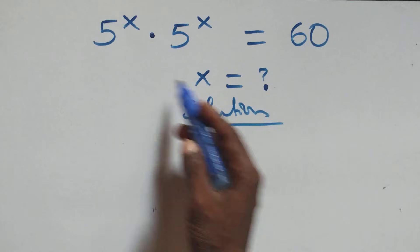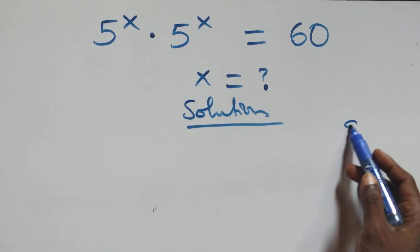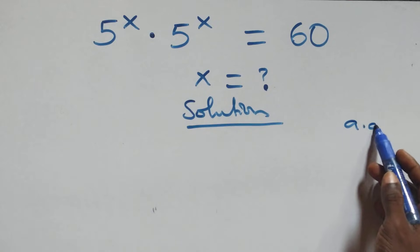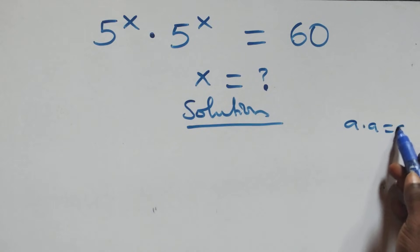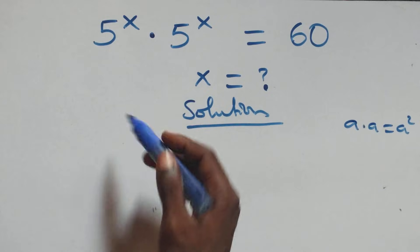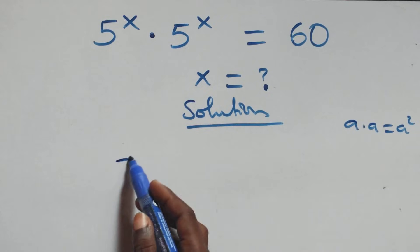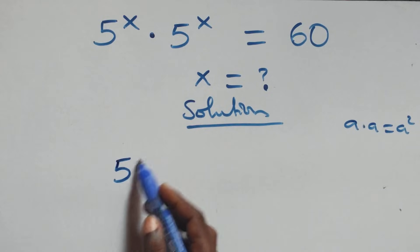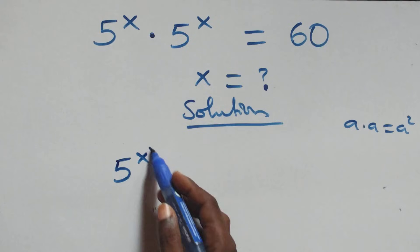What we have here: this follows when we have a times a, the same thing as a squared. As this same thing multiply here, R is as 5 raised to power x.